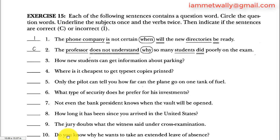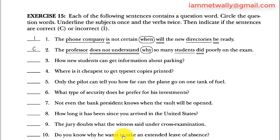Sentence 10: 'Do you know why he wants to take an extended leave of absence?' 'Do' is the helping verb, 'you' is the subject — this is a question. After it, 'why' is a connector because you can't have two questions in the same sentence. 'Why' is followed by the subject 'he' and the verb 'wants.' The sentence is correct, no problem here.